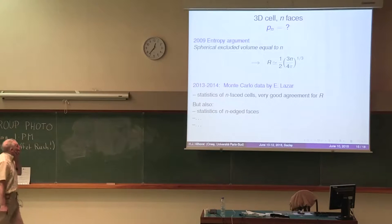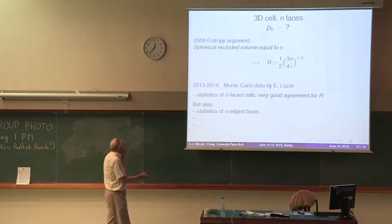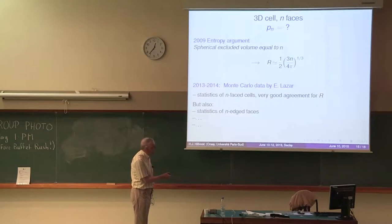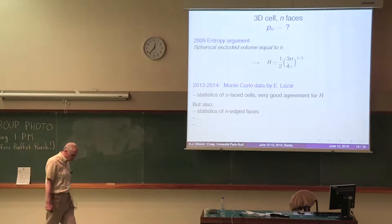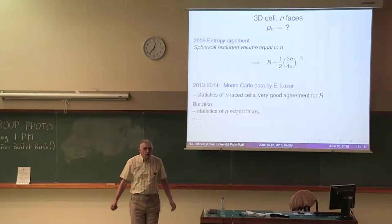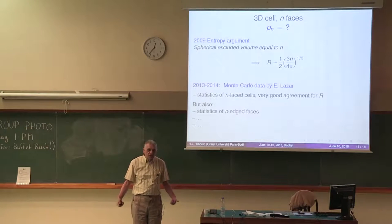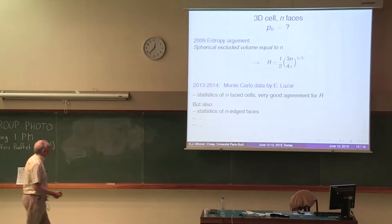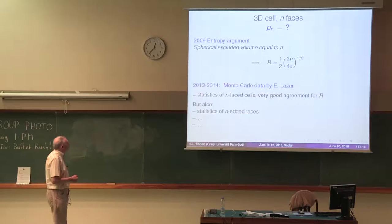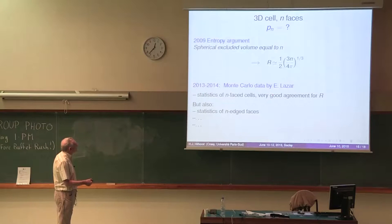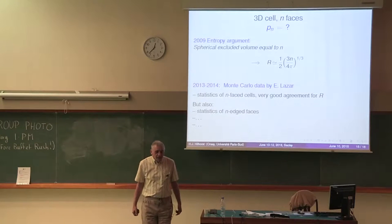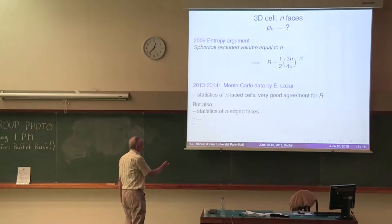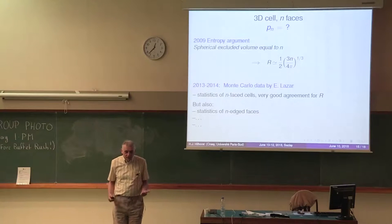Until one or two years ago, there was an American postdoc. He did his thesis at Princeton and went to Columbia. I believe he's now at Penn State. Emanuel Lazar, who did Monte Carlo simulations of three-dimensional Poisson Voronoi cells, and he produced an enormous amount of statistics of the cells, their faces, their edges, and so on. We looked together at these statistics, and we concluded that if you look at the statistics of the n-faced cell, there is a very good agreement for this formula for R. So that gave some confidence in the heuristic method, but it did not help us to find this P(n). And still today, I don't know how to calculate it.